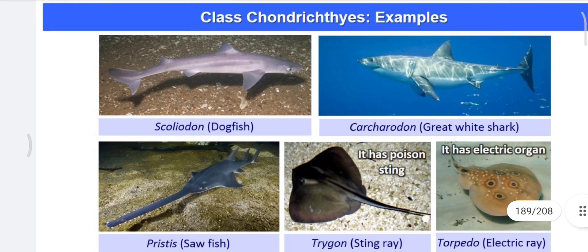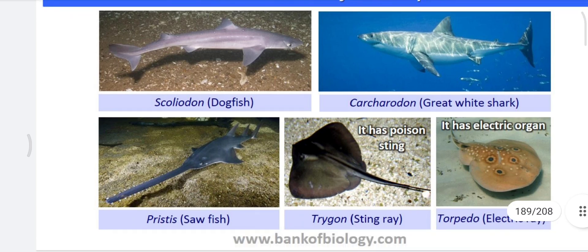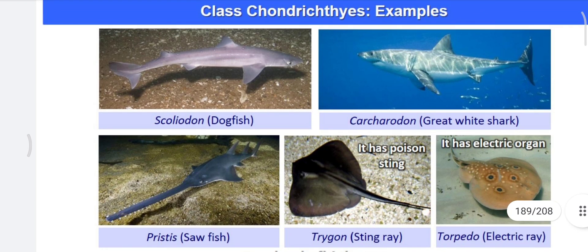Examples of Chondrichthyes: Scoliodon, commonly called dogfish; Carcharodon, the great white shark; Pristis, the sawfish, whose snout looks like a saw; Trygon, the stingray, whose tail has a poisonous sting; and Torpedo, the electric ray, which has electric-producing organs in the abdominal muscles.